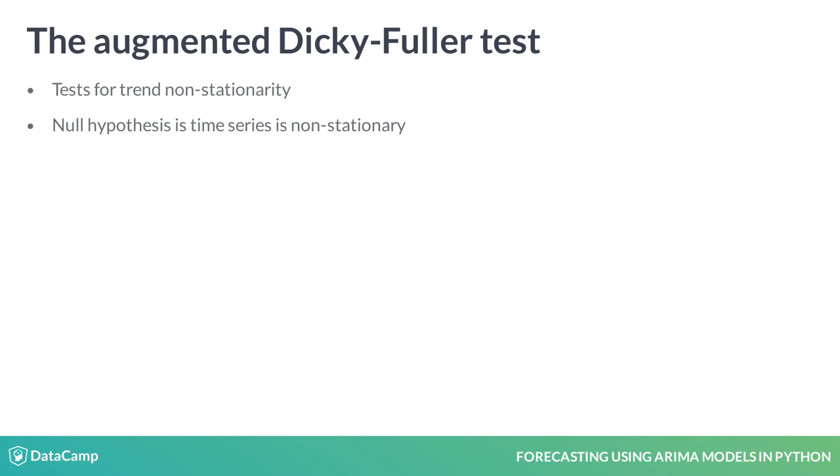The most common test for identifying whether a time series is non-stationary is the augmented Dickey-Fuller test. This is a statistical test where the null hypothesis is that your time series is non-stationary due to trend.